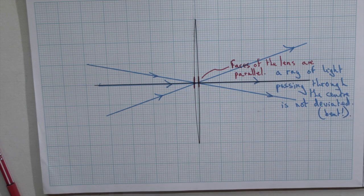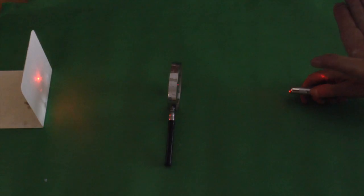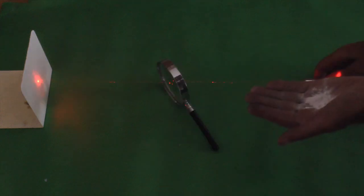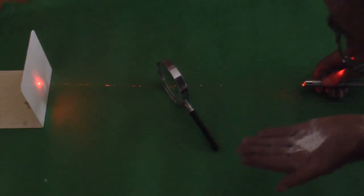Showing this again with a real lens, the ray of light passing straight through along the principal axis is not deviated. Neither is it when the lens is turned providing it passes through the centre of that lens. We use that when we're drawing ray diagrams.